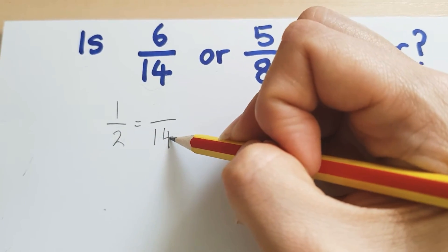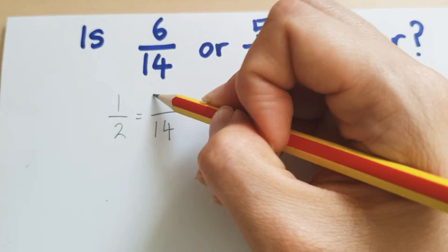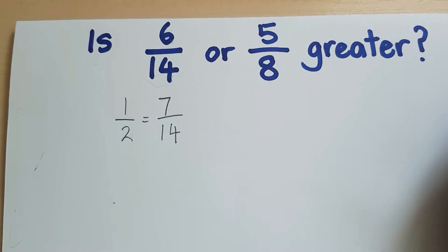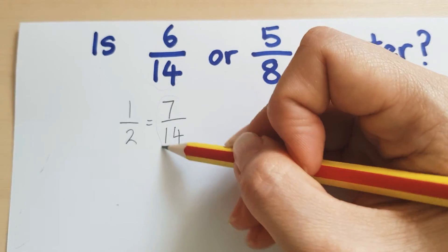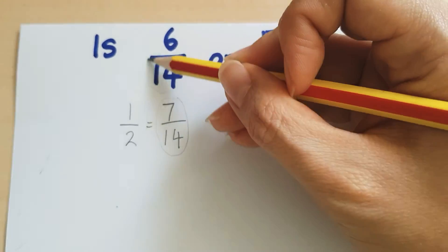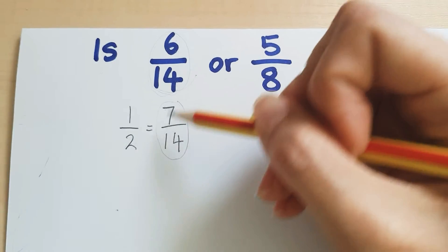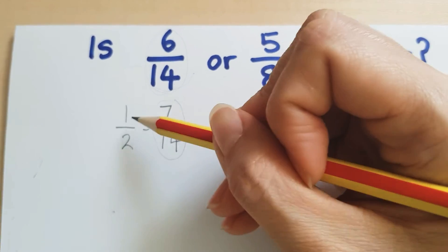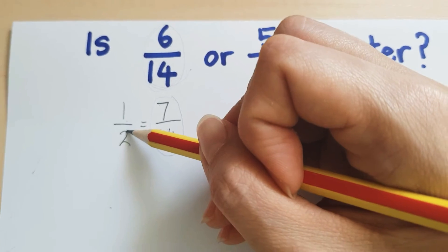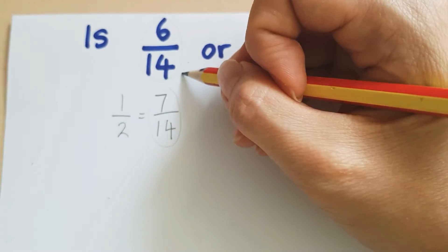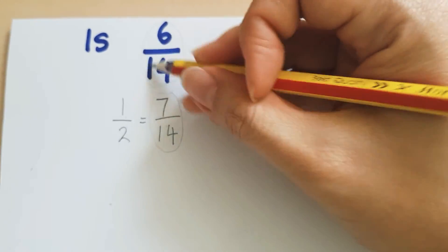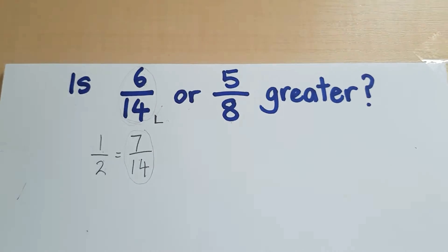If I have 14 equal parts, half would be 7 pieces. So half is 7/14, but this fraction is 6/14. We know that this fraction is actually less than 7/14, which is the same as half. So this fraction is less than half. I'm going to put an L here so I remember that this fraction is less than half.